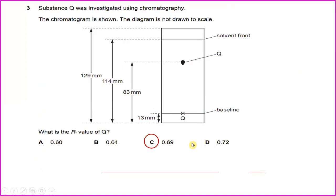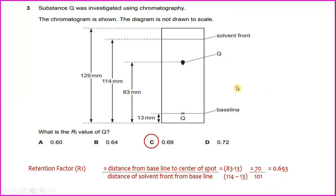Substance Q was investigated using chromatography. The chromatogram is shown, the diagram is not drawn to scale. What is the Rf value of Q? If you want to find the retention factor, there's a formula which is distance from baseline to center of spot. The retention factor Rf equals distance from baseline to center of spot, which is 83 minus 13, you get 70, divided by distance of solvent front from baseline. You have 114 minus 13, you get 101. 70 over 101, you get the value of 0.693. So the answer for number 3 will be C.